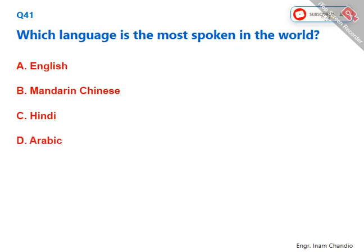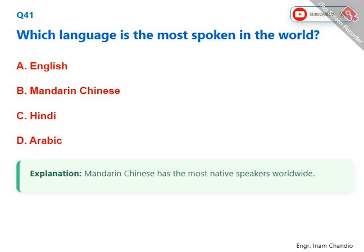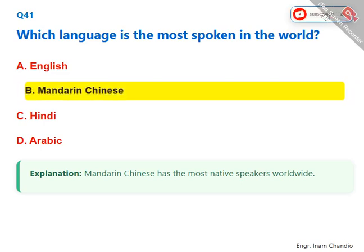Which language is the most spoken in the world? Mandarin Chinese has the most native speakers worldwide. The correct answer is B. Mandarin Chinese.